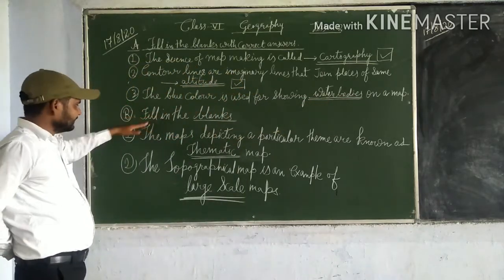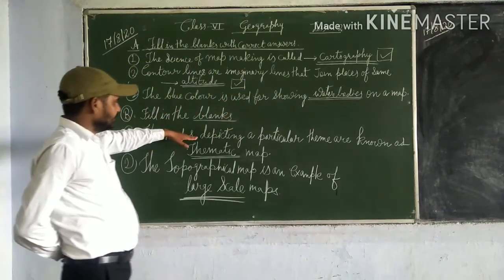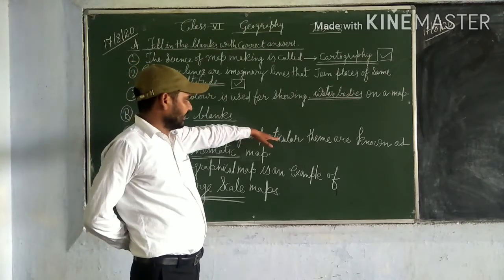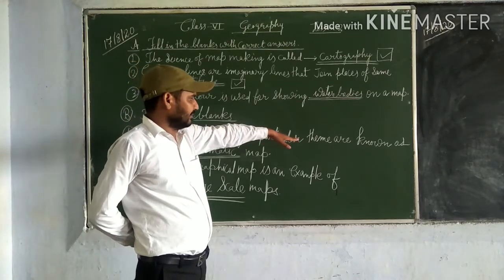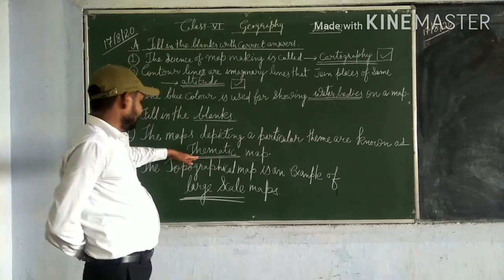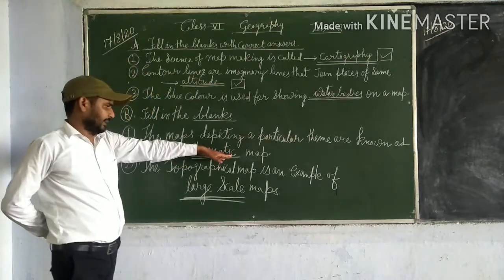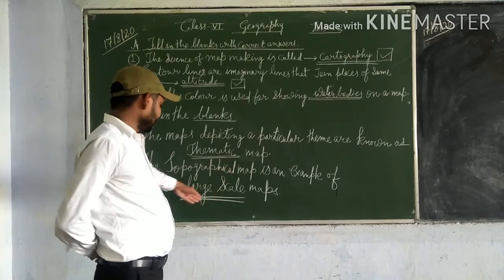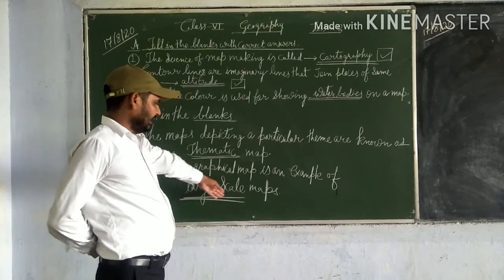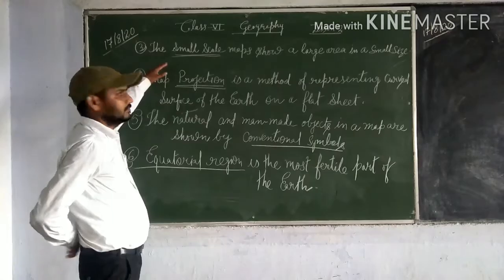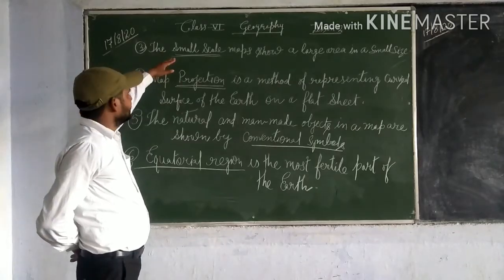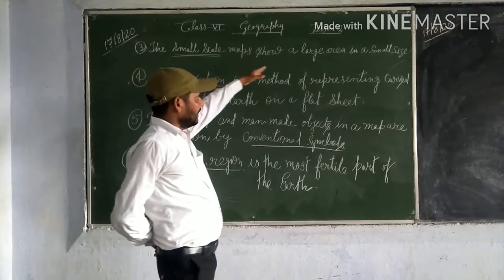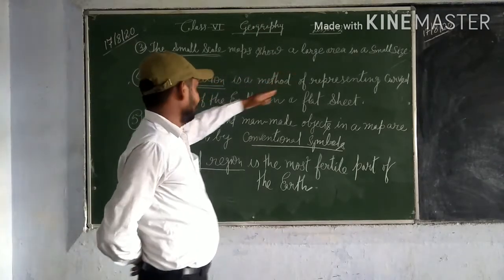Friendly friends, the maps developing a particular theme are known as thematic maps. The topographical map is an example of large scale maps. The small scale maps show a large area in small size.